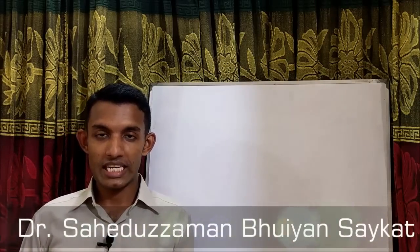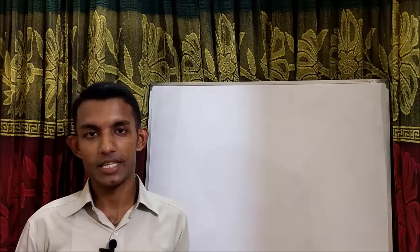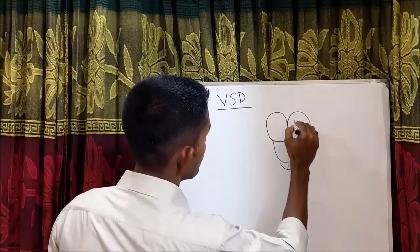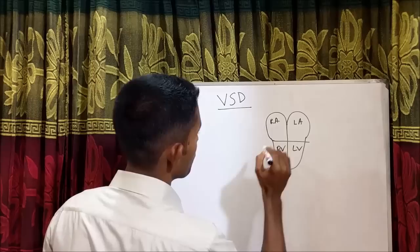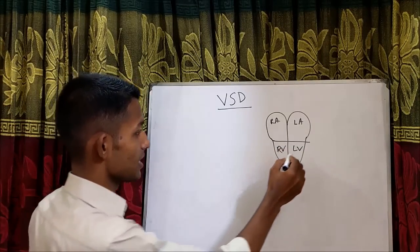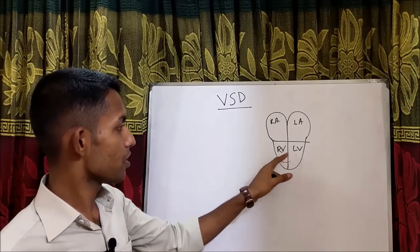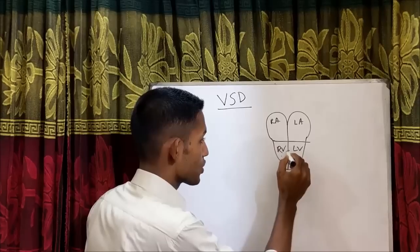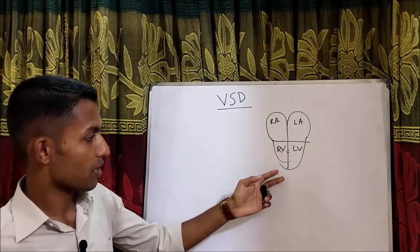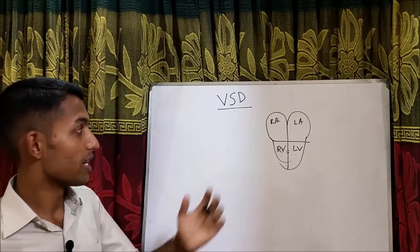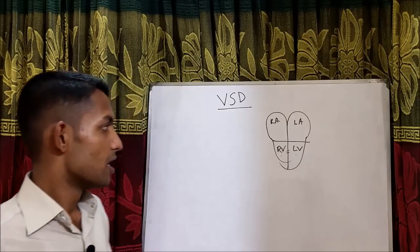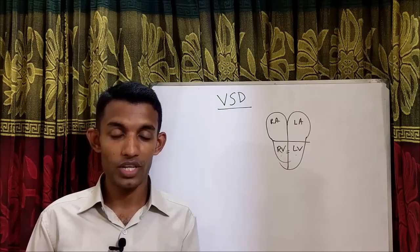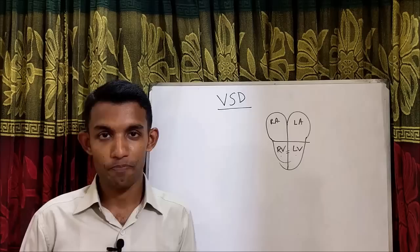I'm Dr. Shwikath. Today I'll discuss about VSD, ventricular septal defect. So what is VSD? This is a schematic diagram of the heart — this is the left ventricle, right ventricle. In between the left ventricle and right ventricle there is an interventricular septum. If there is any defect or hole or opening in this interventricular septum — the wall that separates the two ventricles — then it is called ventricular septal defect. This ventricular septal defect is an acyanotic congenital heart disease and the shunt is left to right shunt.